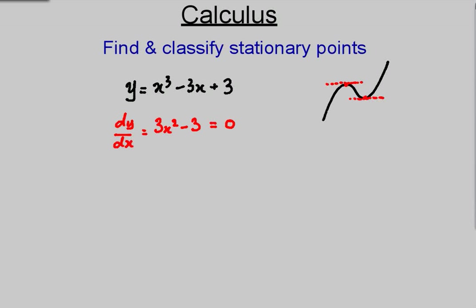Gradient is zero, so we're looking for this to be zero. This is the way we find stationary points. Let's quickly solve: 3x² - 3 = 0, so 3x² = 3, x² = 1, x = ±1, not forgetting the positive and negative square roots.